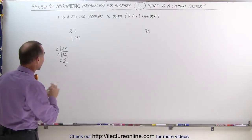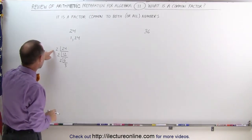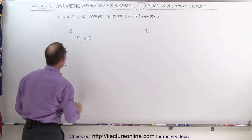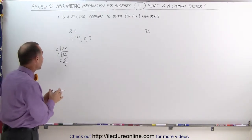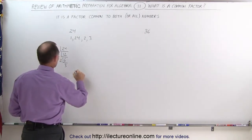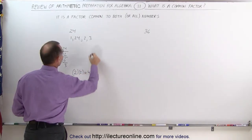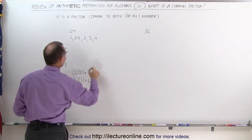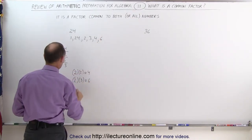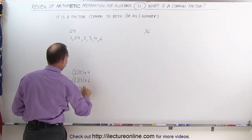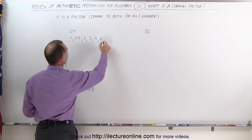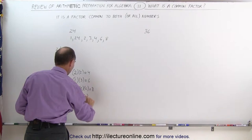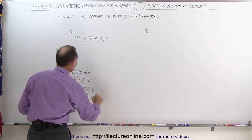Now to find all the other factors besides 1 and 24, we're going to take all the numbers that appear here, which is 2 and 3, and find all the other factors by multiplying any of the combinations together. 2 times 2 equals 4 — that's one factor. 2 times 3 gives us 6 — another factor. 2 times 2 times 2 equals 8 — another factor. And 2 times 2 times 3 equals 12 — another factor.